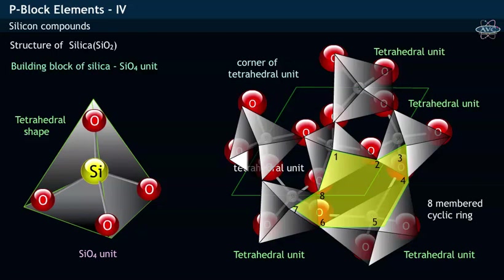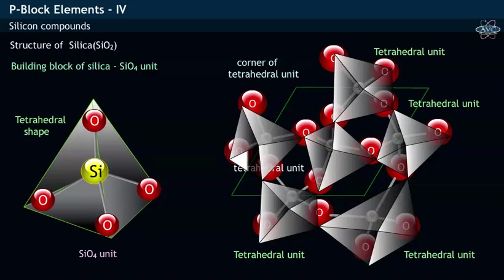This cyclic ring structure formed consists of alternate silicon and oxygen atoms. This repetition of tetrahedral units gives a three-dimensional structure to silica.